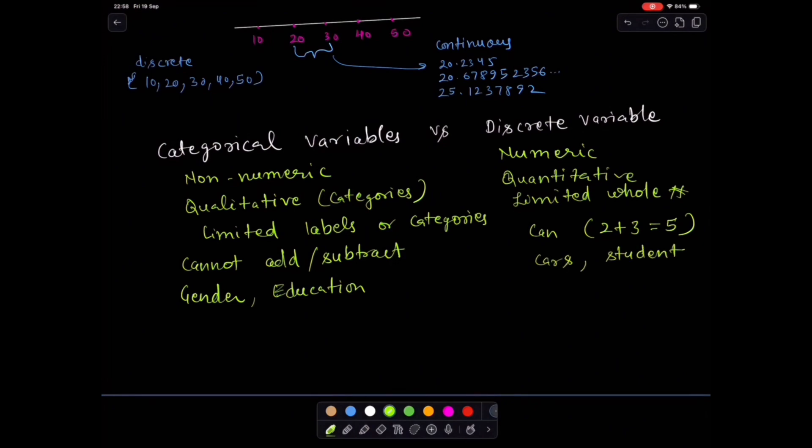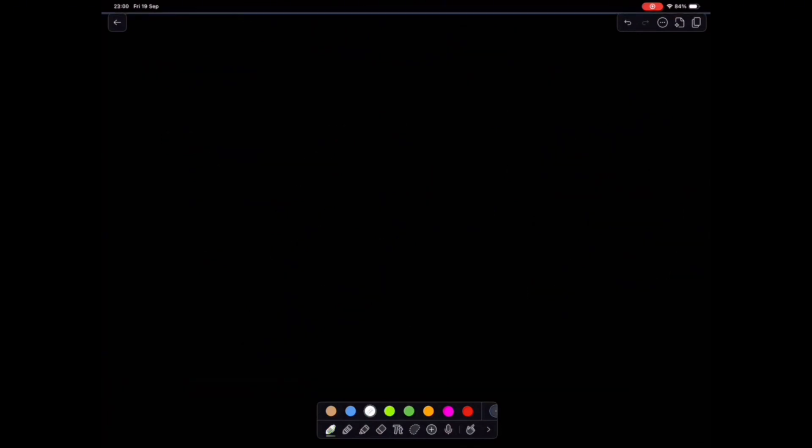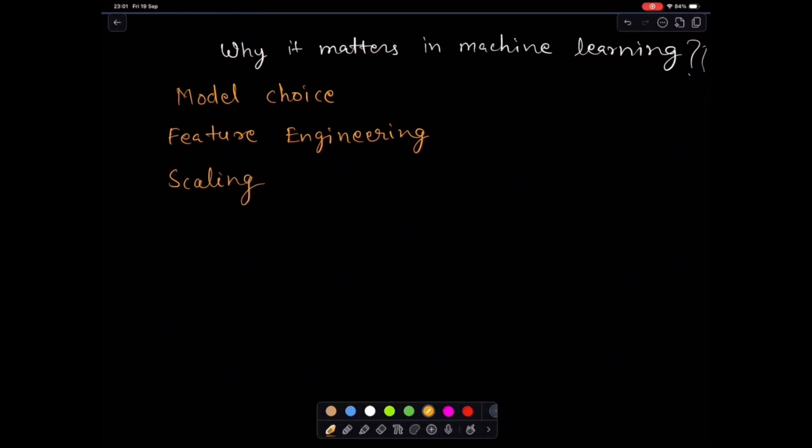So why are we even spending time on this? Because variable types directly affect which model you can use, how you process or encode the data, and whether you need scaling or transformation. For example, linear regression works best with continuous variables. Classification models often use categorical variables. Discrete variables can sometimes be treated as categorical like a 1 to 5 star rating. So knowing your variables isn't just theory, it is the foundation for building the right machine learning pipeline.